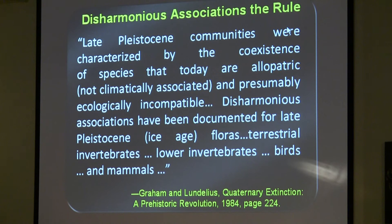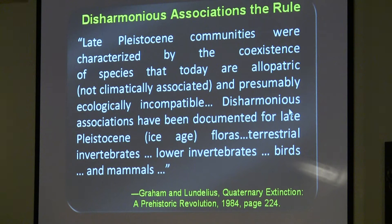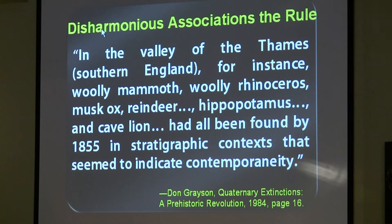The third subsidiary mystery is 'disharmonious associations' — animals that love warmth mixed with animals that love cold, found together as bones in ice age deposits. It is not an exception; it is the rule. Late Pleistocene communities were characterized by coexistence of species that today are not climatically associated and were presumably ecologically incompatible. This has been documented for ice age plants, terrestrial invertebrates, birds, and mammals. It implies an equitable climate where summers were cooler and winters were warmer. The most outrageous example is in England, where hippos are found with cold-climate animals in a hundred locations.